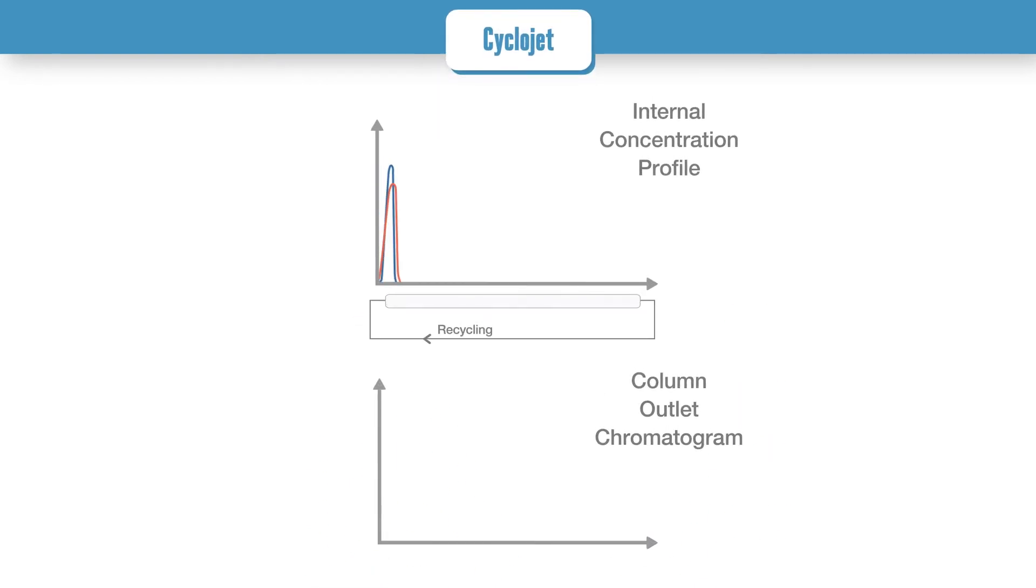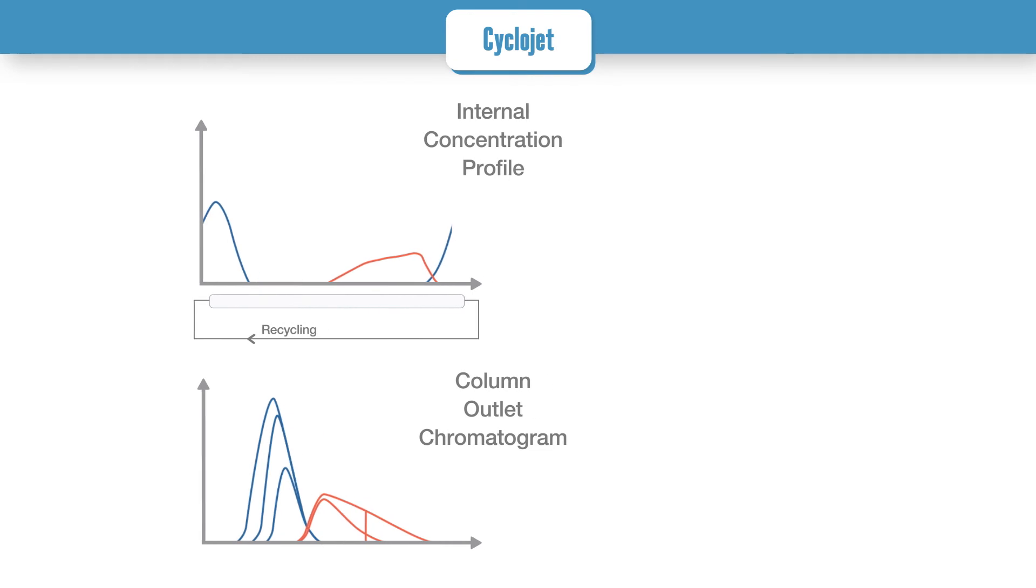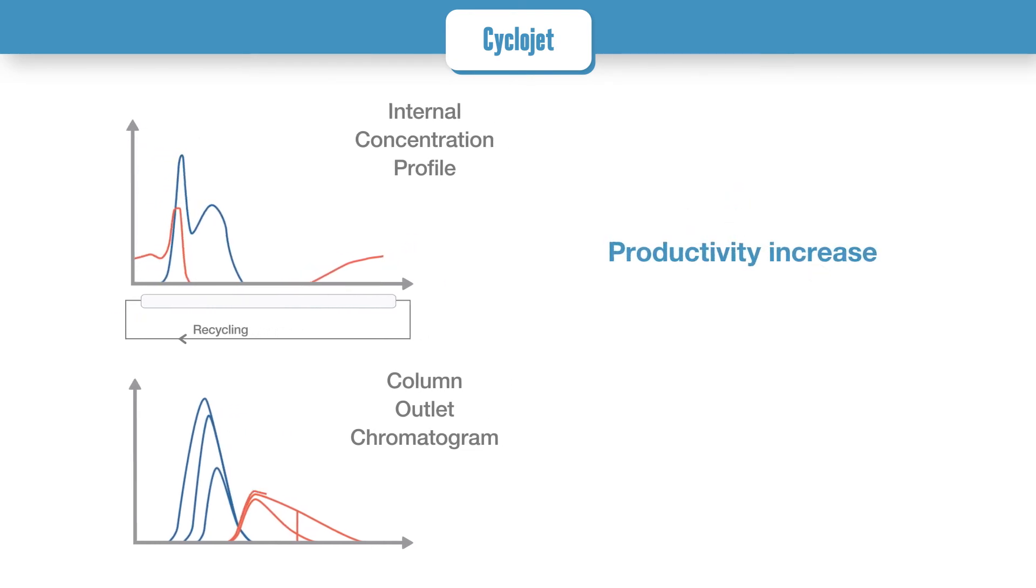Cyclojet is a steady-state recycling process, which has characteristics that are intermediate between batch HPLC and SMB using a single column. In a Cyclojet, purified fractions are collected, while fresh eluent is injected, and the part of the outlet stream that contains both products is recycled into the column. This enables us to increase the productivity and reduce eluent consumption compared with batch chromatography. Cyclojet is particularly suitable for difficult separations.